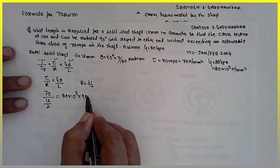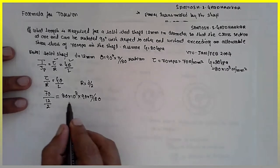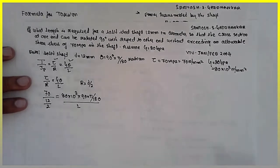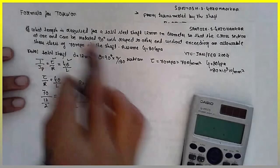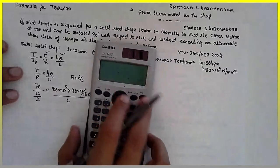90 into pi by 180 divided by L. What we have to find out? We have to find out the length L.